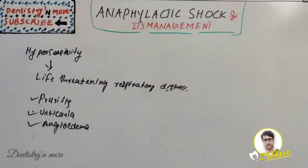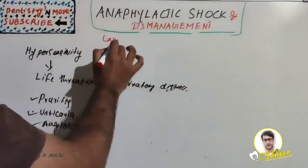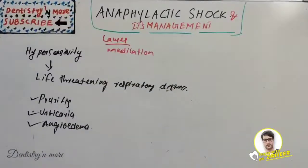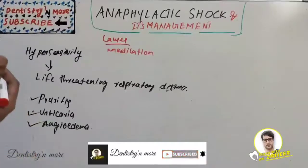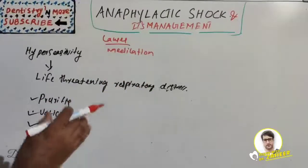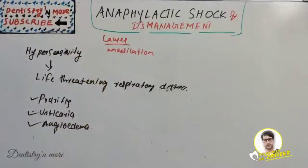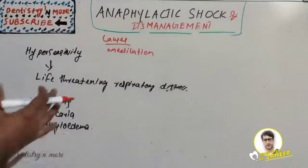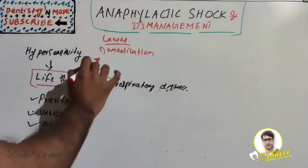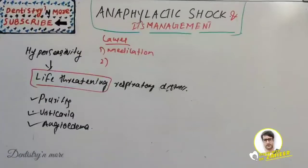The most common causes of anaphylaxis are medications, including antibiotics — especially penicillin and sulfa drugs — as well as vaccines, opiates, aspirin, NSAIDs, local anesthetics, IV fluids, and insulin. Any medication should have a test dose done before application to avoid this serious, life-threatening anaphylactic shock.